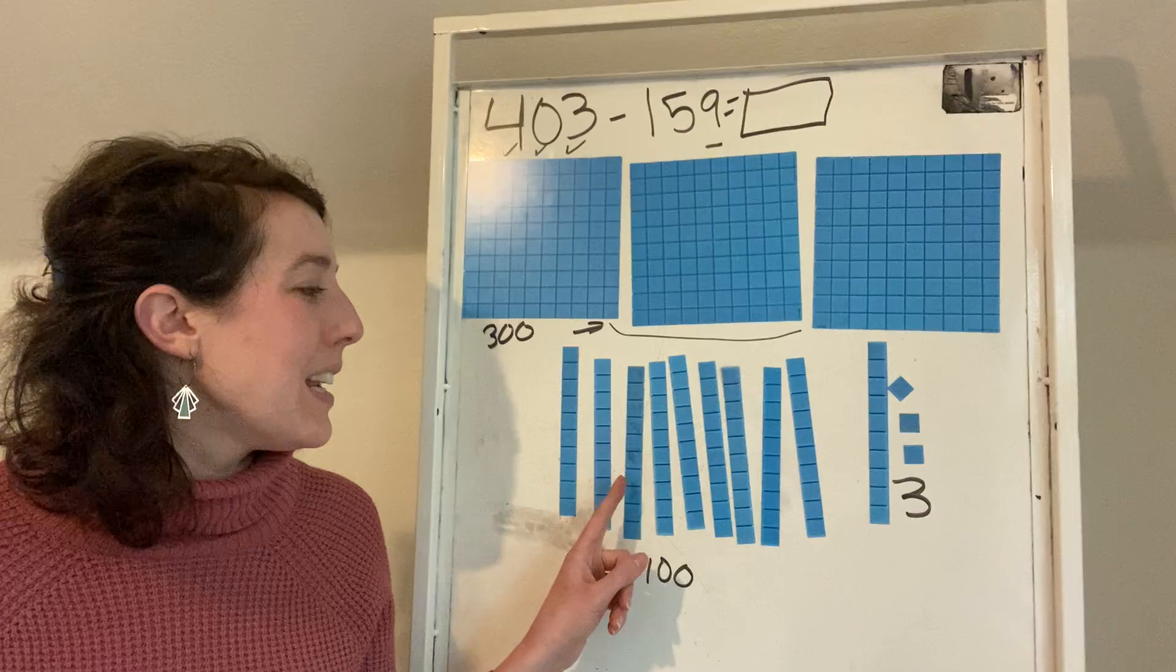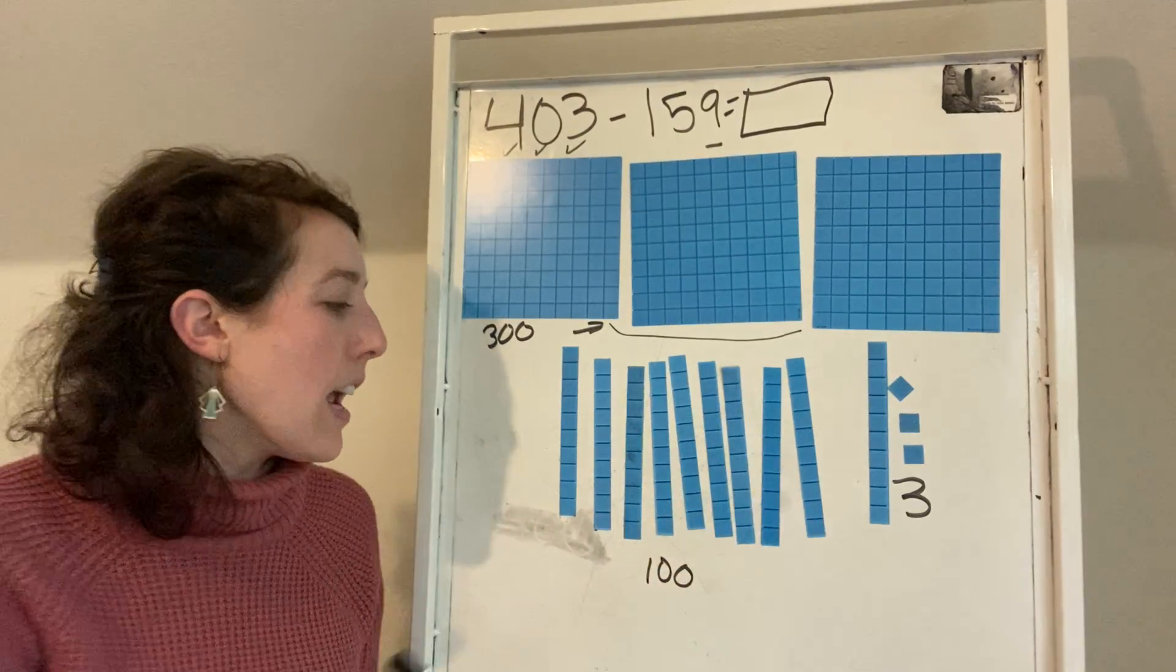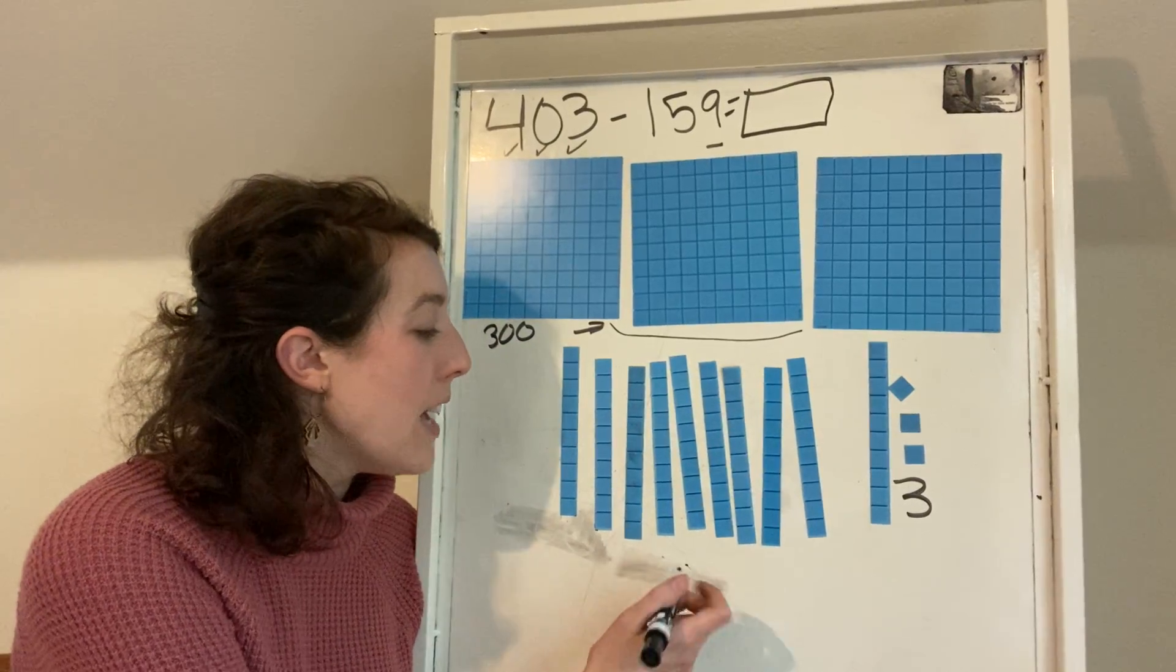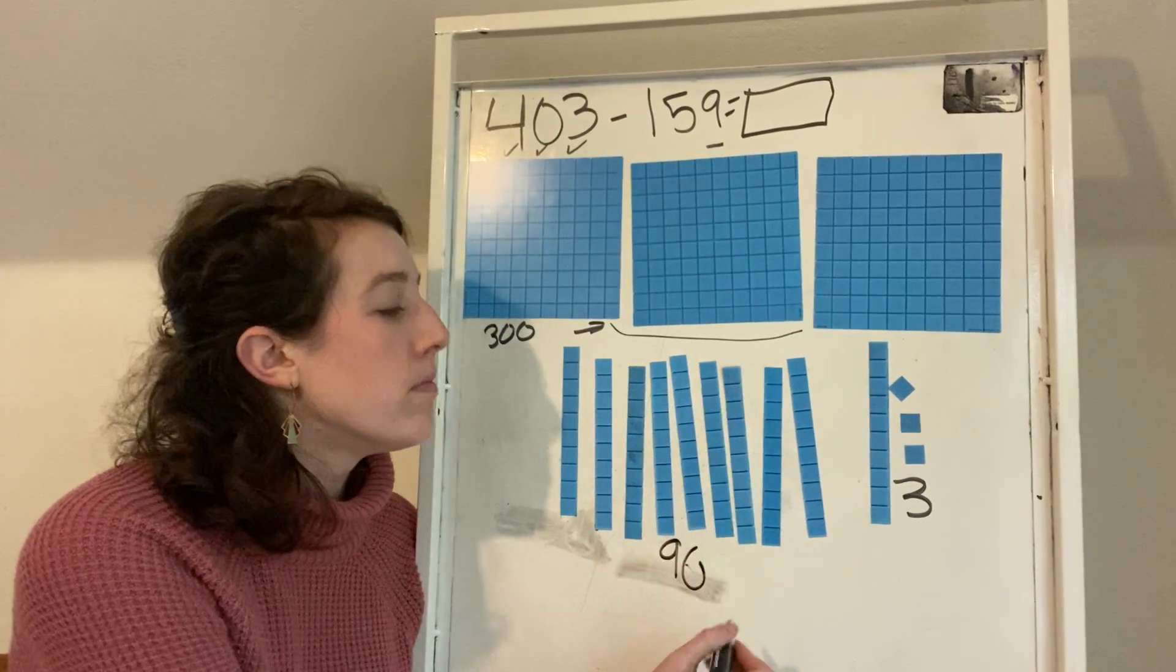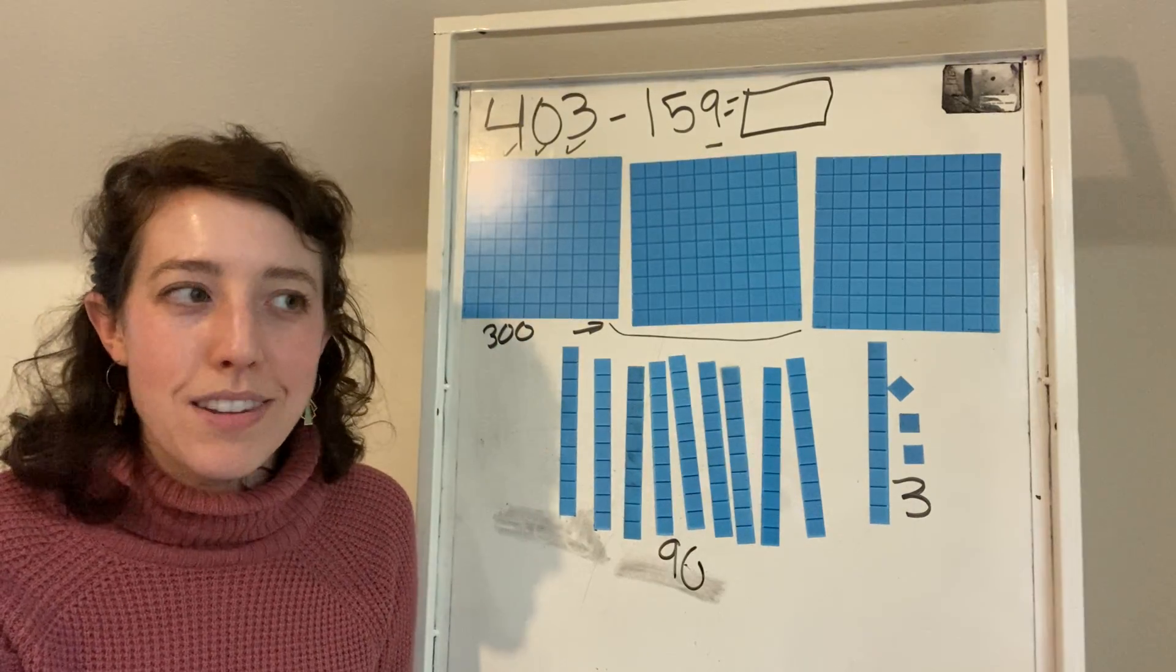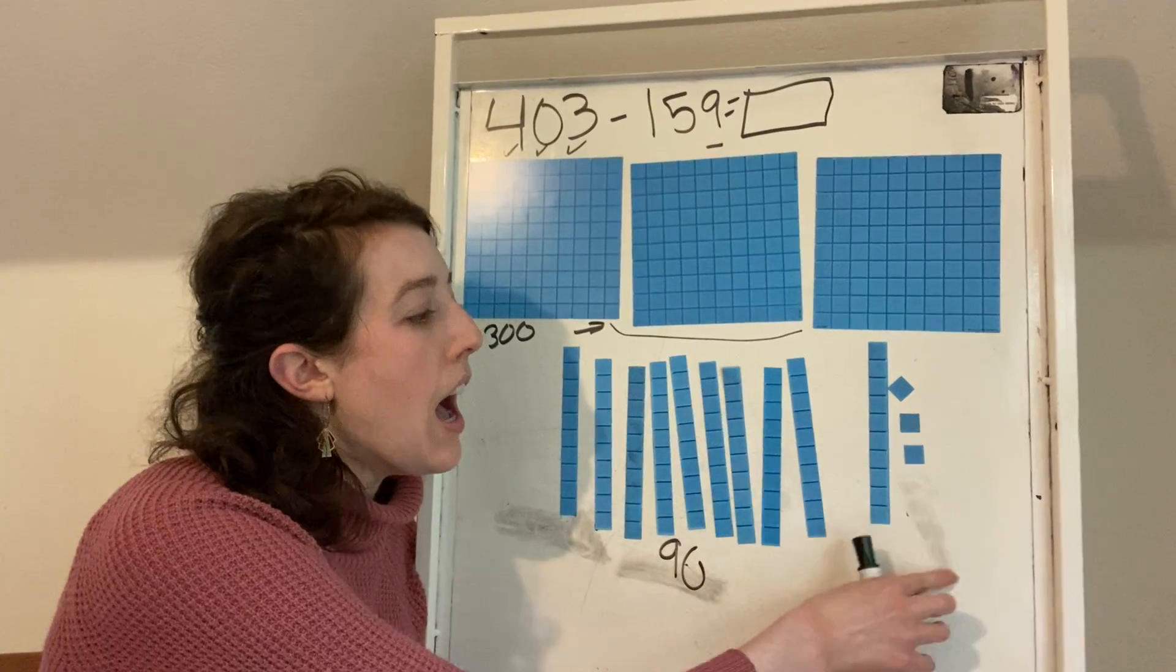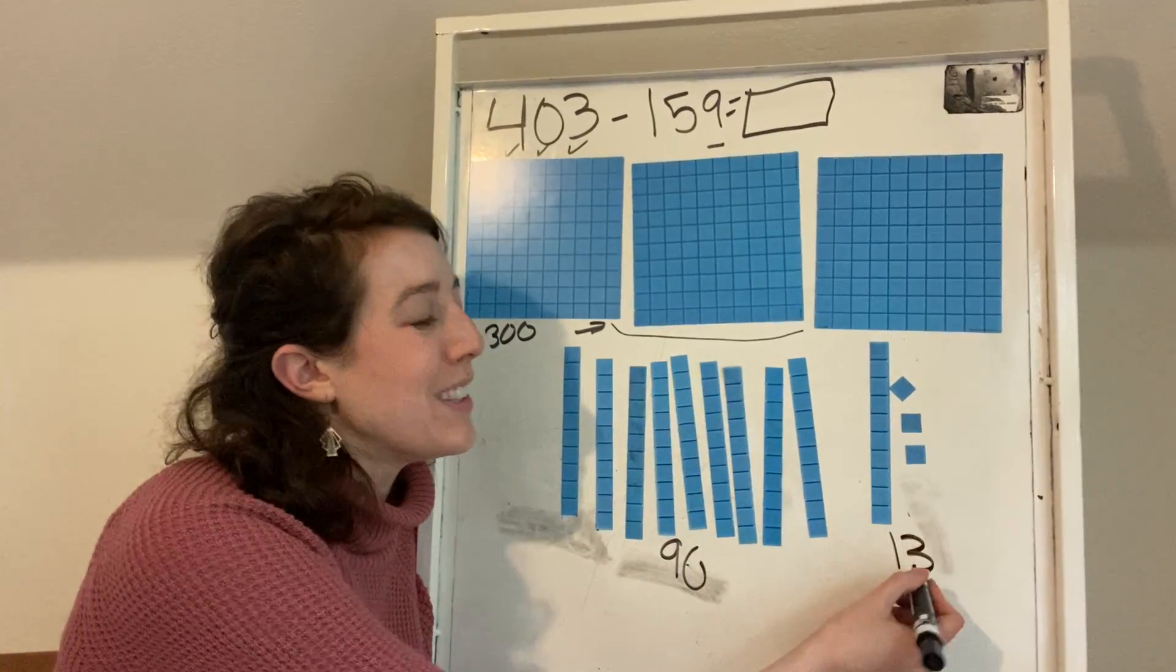10, 20, 30, 40, 50, 60, 70, 80, 90. So I'm going to erase that to show that now I have 90. And look over here. I don't have three ones anymore. How many ones do I have? I have 13 ones.